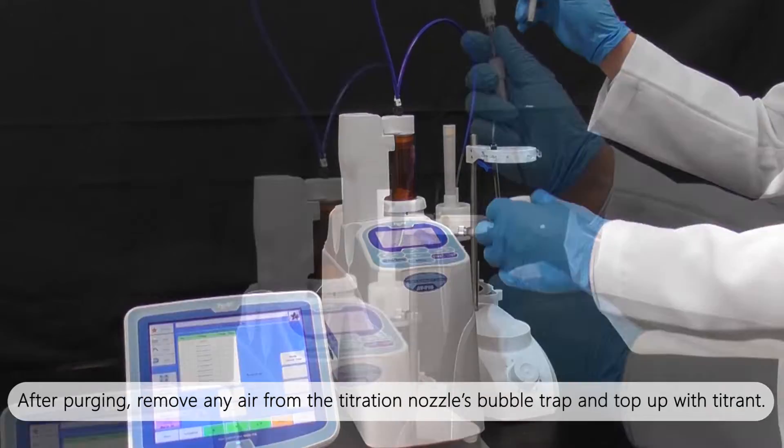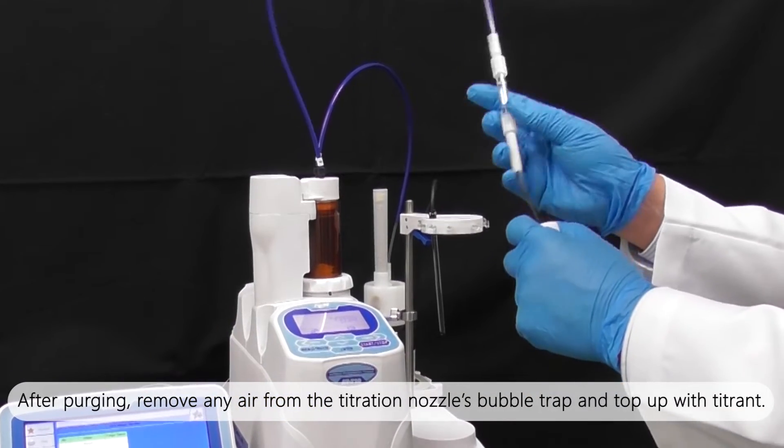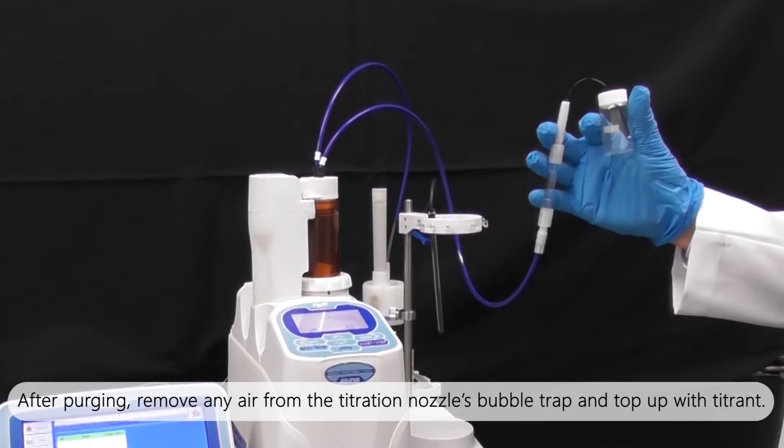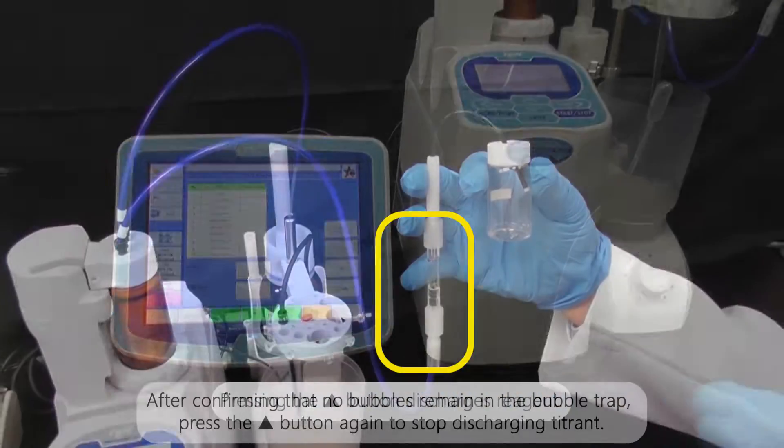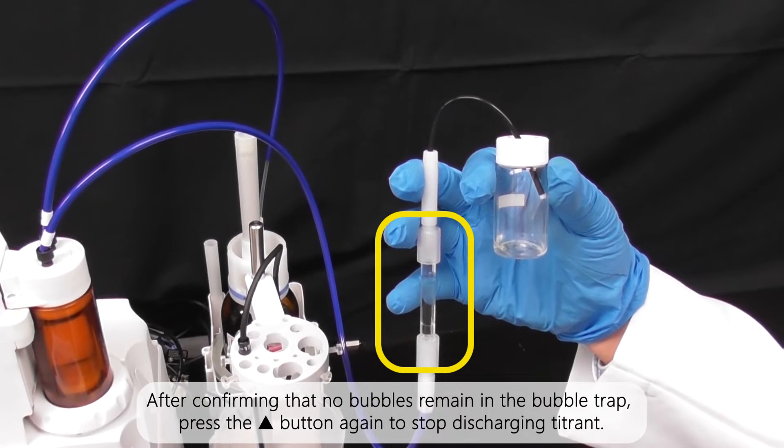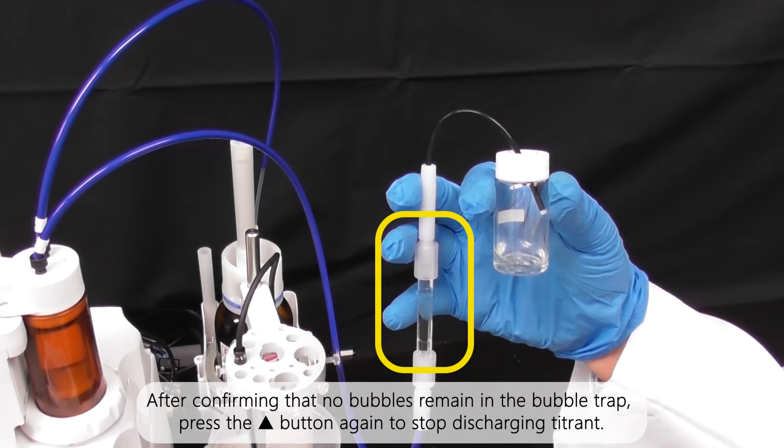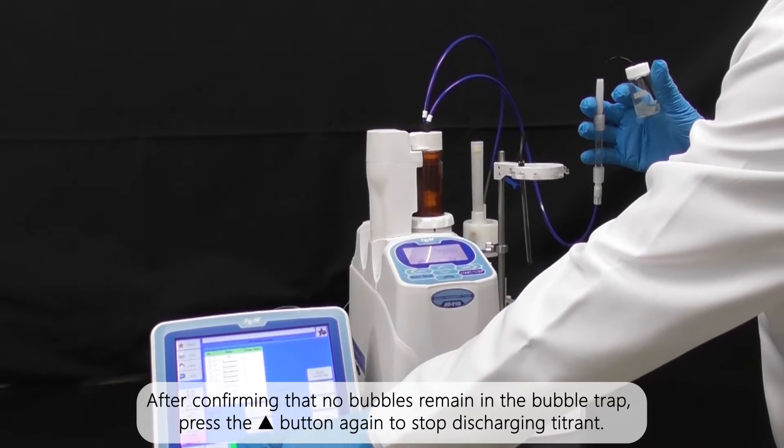After purging, remove any air from the titration nozzle's bubble trap and top up with titrant. Pressing the up button discharges reagent. After confirming that no bubbles remain in the bubble trap, press the up button again to stop discharging titrant.